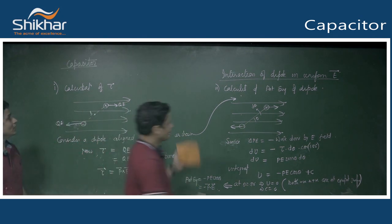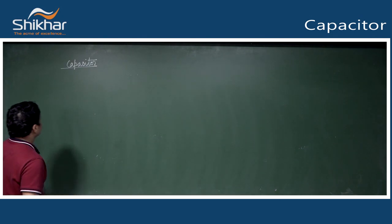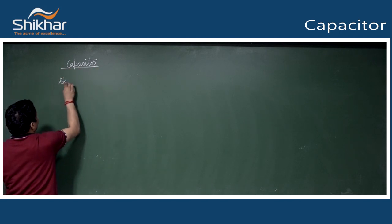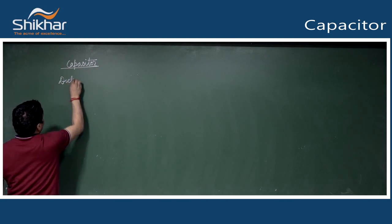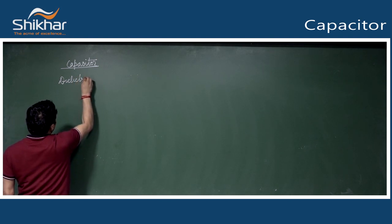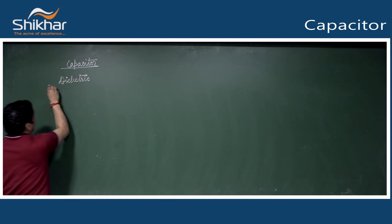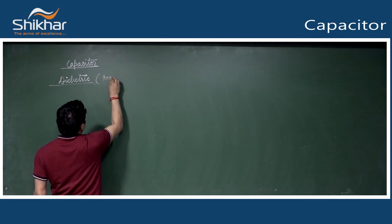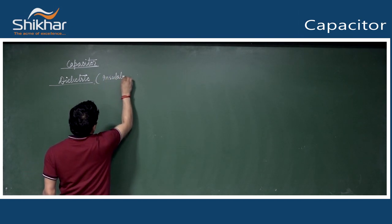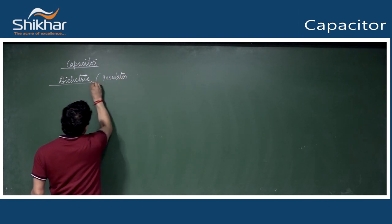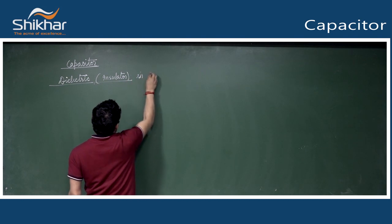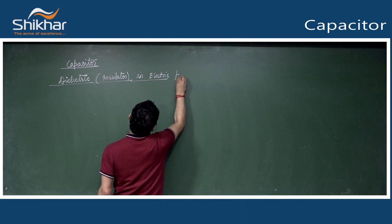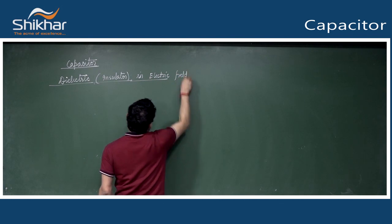Next topic: capacitor. In capacitors, we first discuss dielectric. Dielectric is nothing but another name for insulator. We consider it in a uniform electric field.